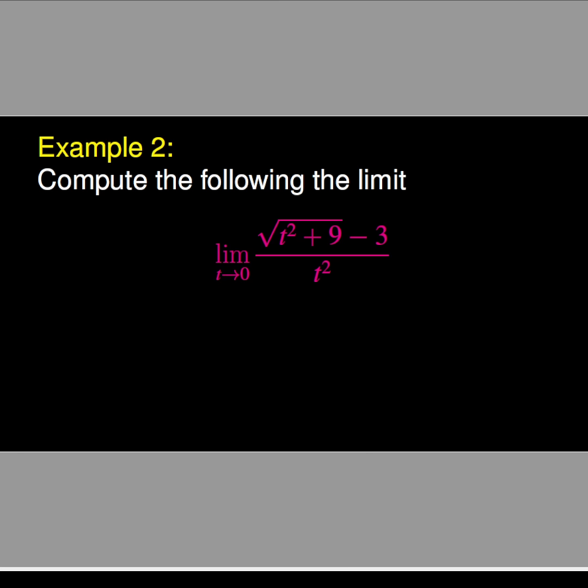For this second example, we have to compute the limit as t goes to 0 of the expression: the square root of t² + 9 minus 3, over t². This function has a radical, so we will certainly use the conjugate expression to simplify the entire expression.